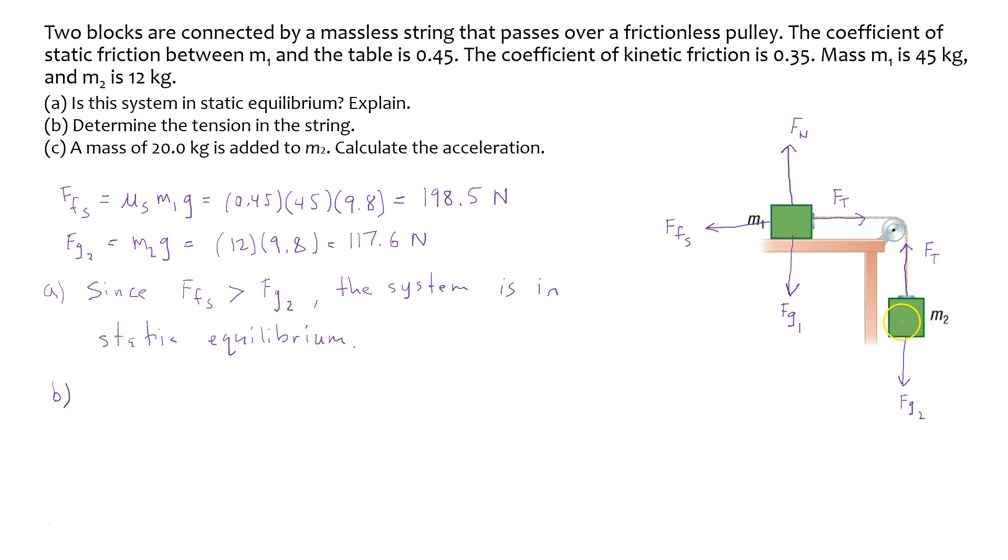And so what we can write then is, since M2 is not moving, Fg2 is equal to Ft. So Ft is going to equal what Fg2 was. So Fg2 is, it was 117.6 Newtons.